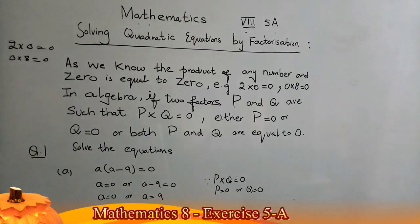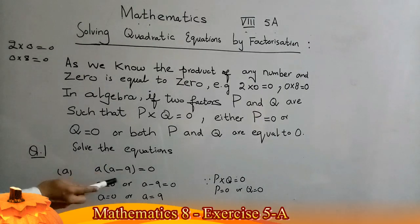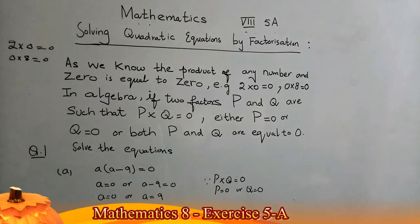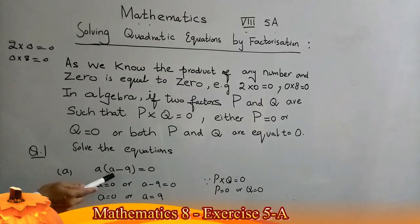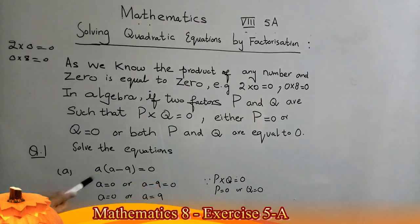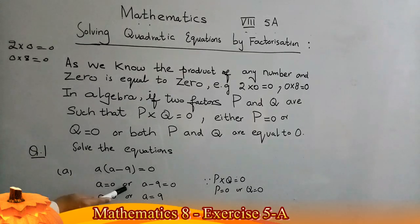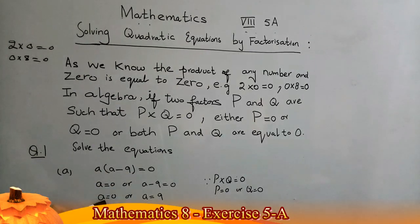I will start Exercise 5A, Question 1. Solve the equation — solve means we have to find the value of the variable. The equation is a(a − 9) = 0. Using the zero product principle, either a = 0 or a − 9 = 0, giving a = 9. This is the solution of the given equation.